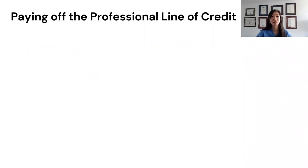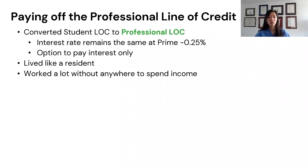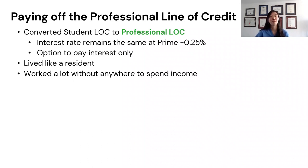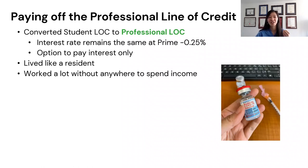When I graduated and became a staff physician, I converted my line of credit to a professional line of credit, which allowed me to keep my interest rate at prime minus 0.25%. At that point, my monthly income increased to about $20,000 to $25,000 per month, and I really went hard on my debt. I lived with housemates, took public transportation, worked three jobs, and worked a lot of weekends during COVID doing vaccinations and patient calls. My monthly expenses were about $2,000, and everything else went into paying off the debt in just a few months.